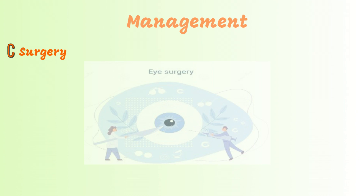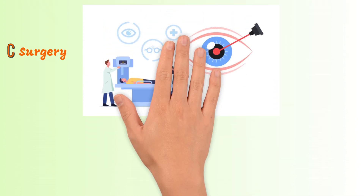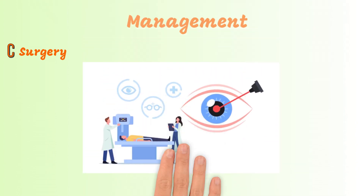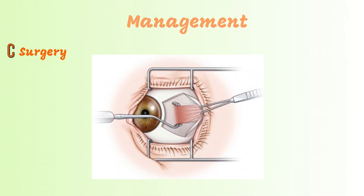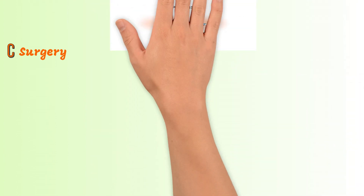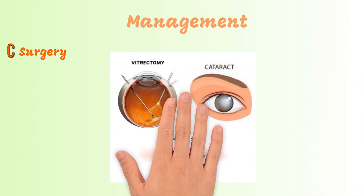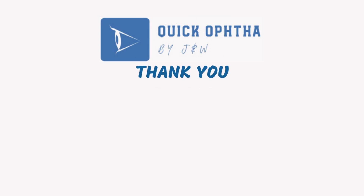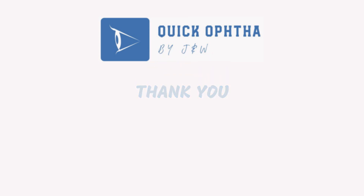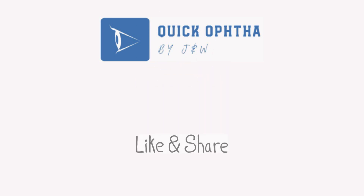Amblyopia itself is not a surgical condition, but there are times when surgery may treat the underlying cause of the amblyopia. Refractive surgery may be used to correct anisometropia. Eye muscle surgery can correct strabismus. Vitrectomy, cataract, or ptosis surgery may alleviate causes of deprivation amblyopia.